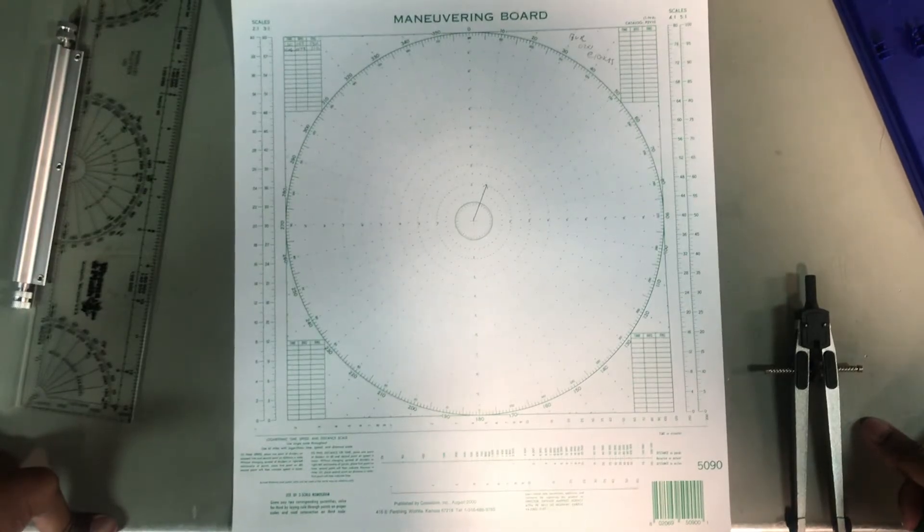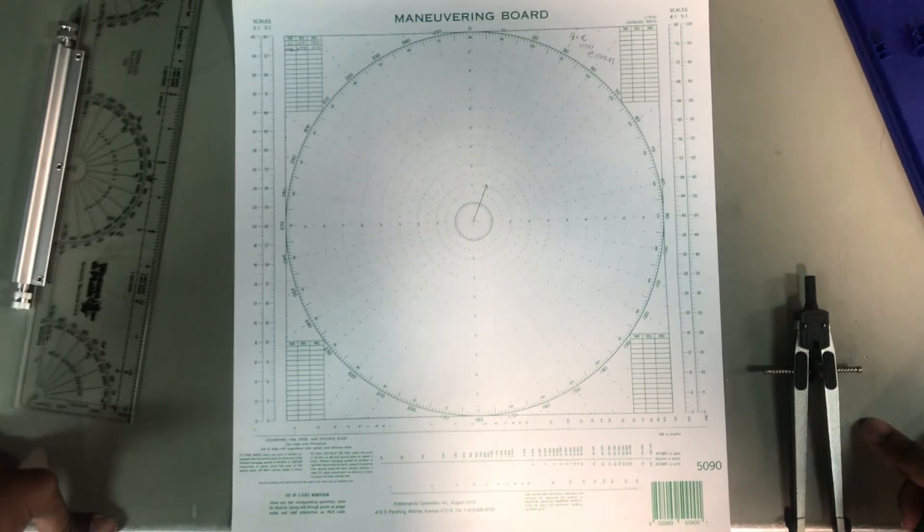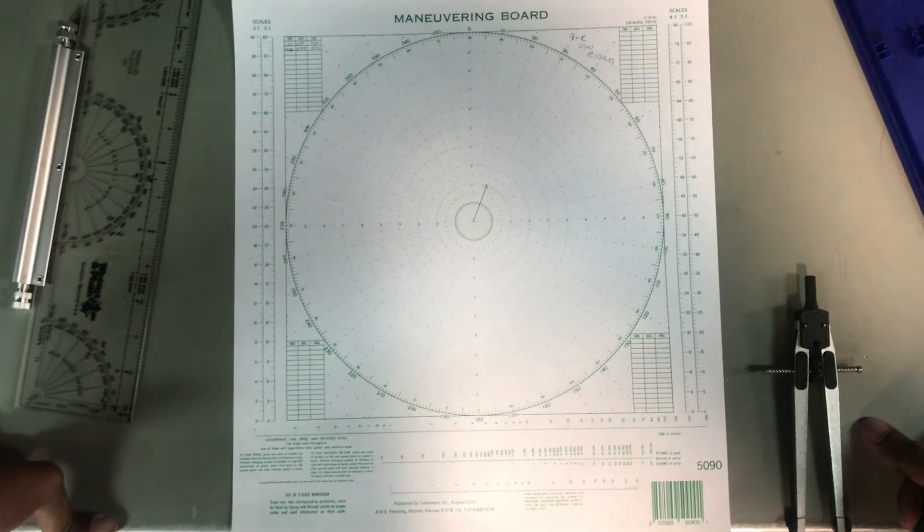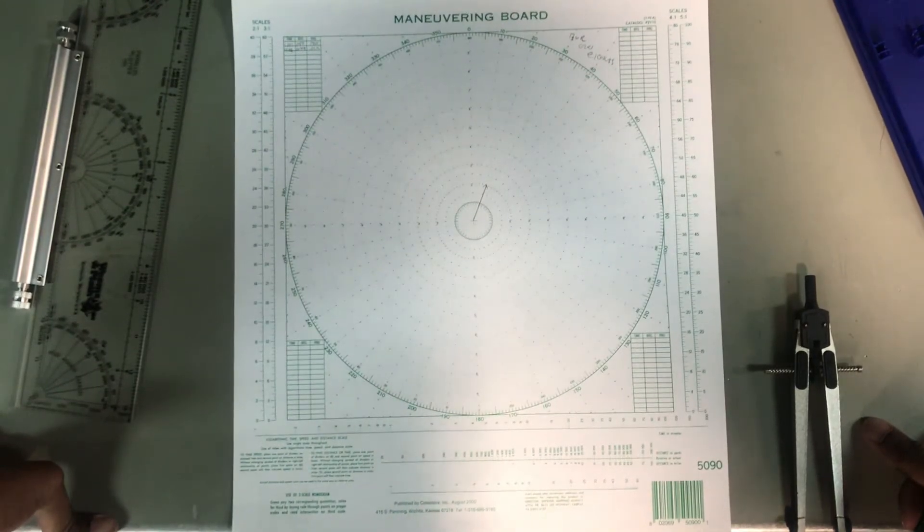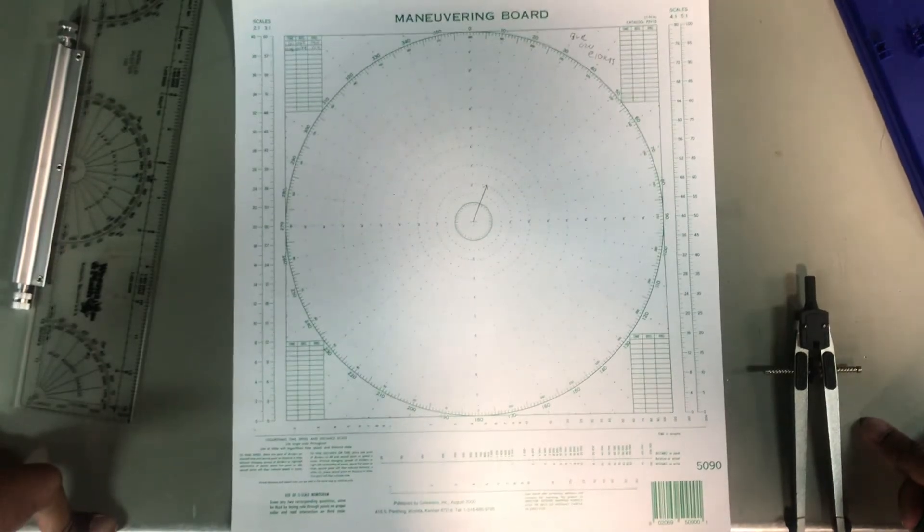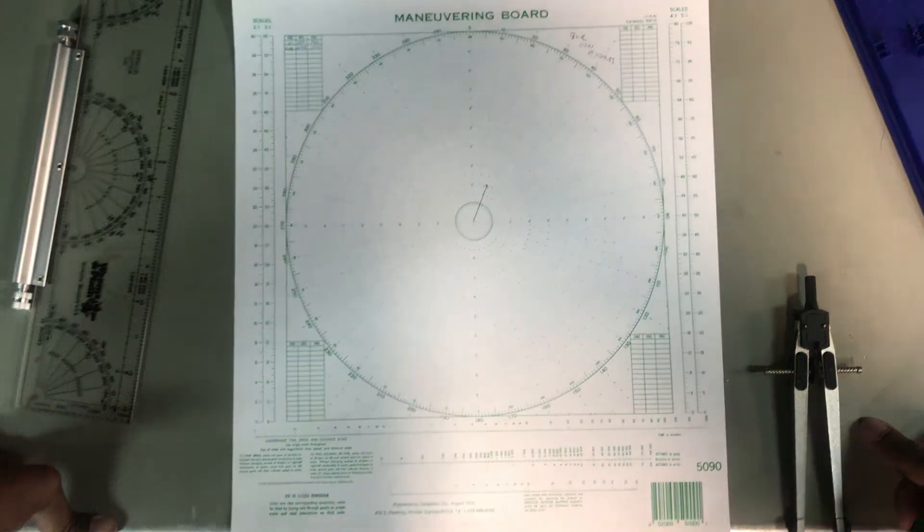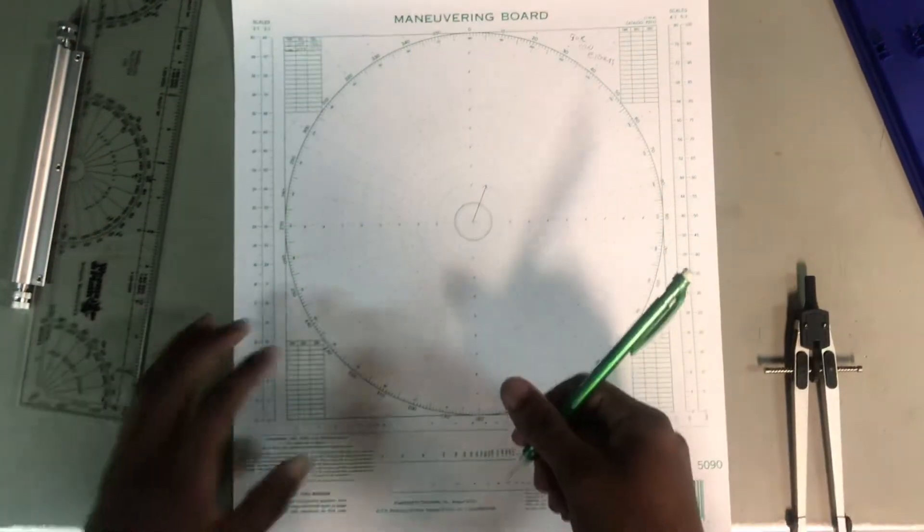So whenever you're doing your radar fixes, you want to either have 2 hits 3 minutes apart or 3 hits 2 minutes apart. That way, the time equals 6 minutes, which is easily divided by 3. Pretty simple. Rules of 3 work very well doing mowboards.